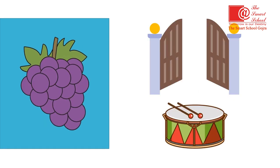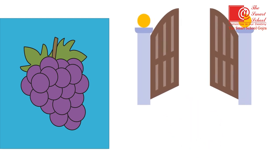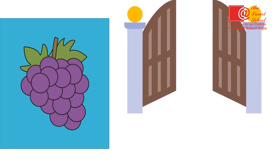Grapes — now choose the picture of the same beginning sound: gate or drum? Right — gate. G-grapes, G-gate — both begin with the same sound.